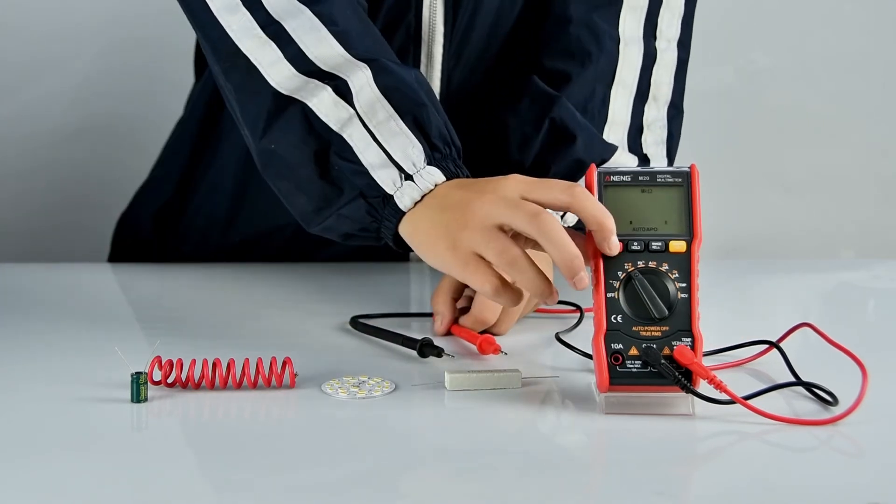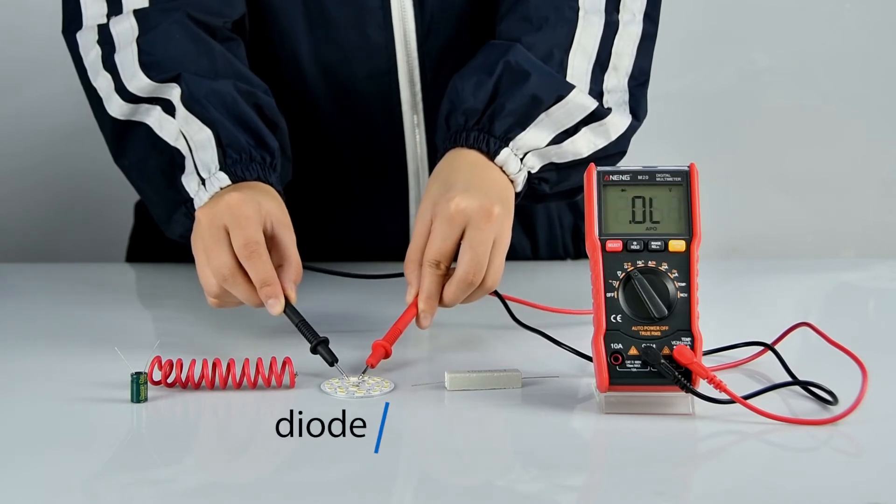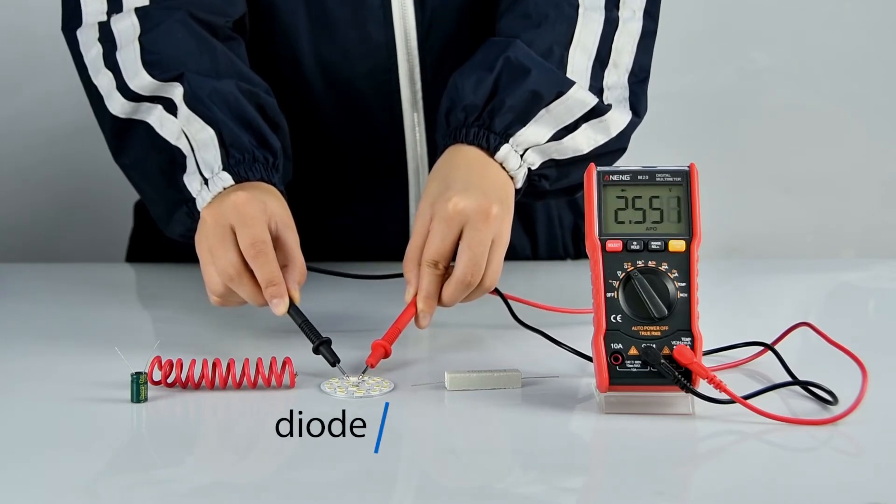Switching function, diode measurement. Positive and negative poles need to be aligned.